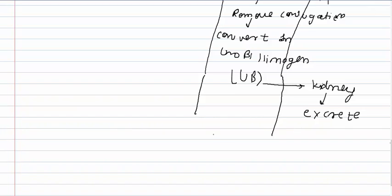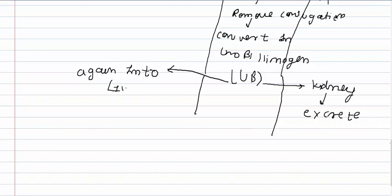This urobilinogen can also enter into the enterohepatic cycle and may again go to the liver. The cycle will then repeat itself, with conjugation occurring again and excretion back into the intestine.